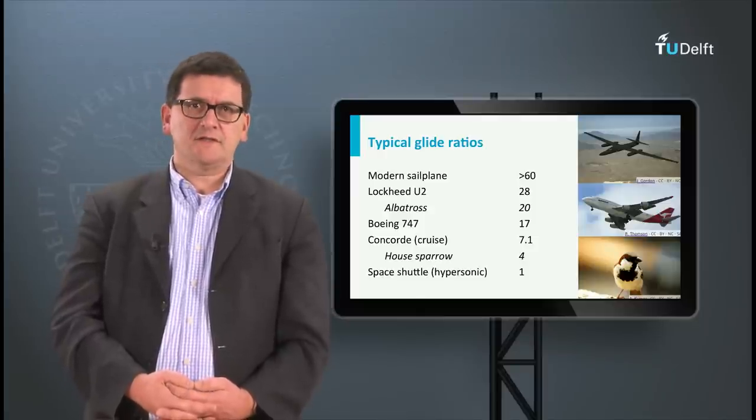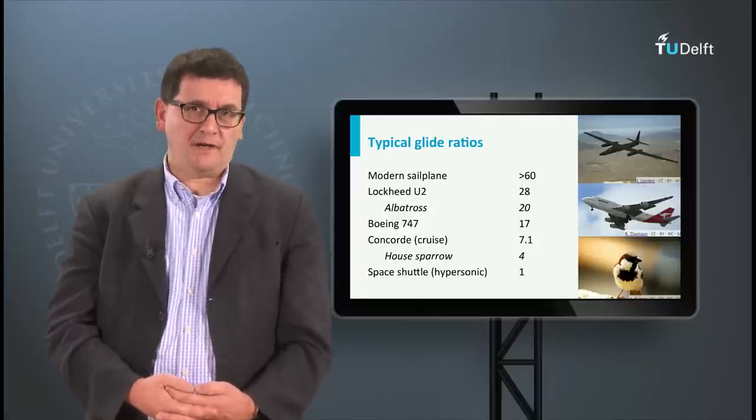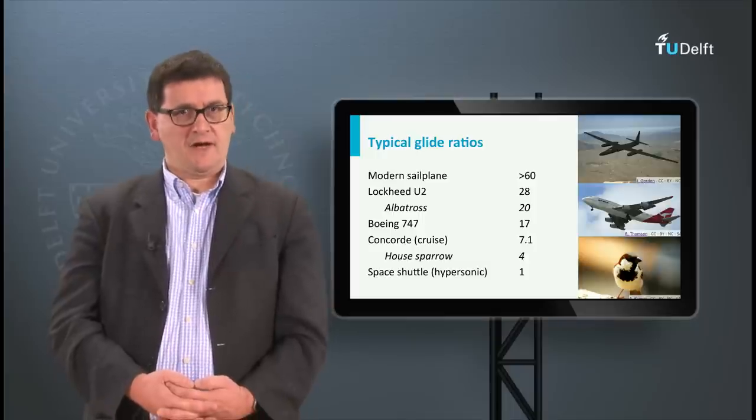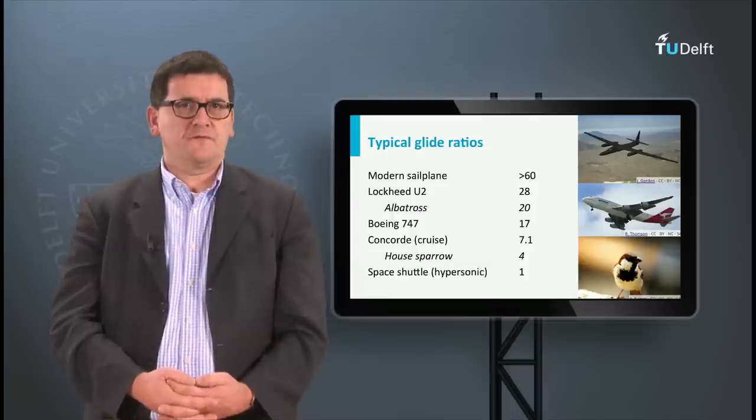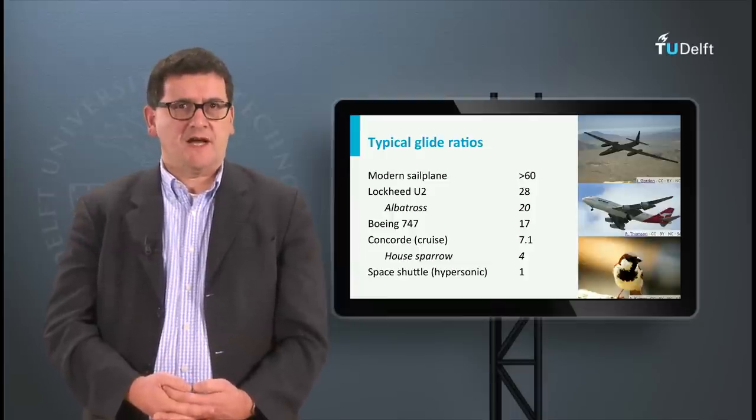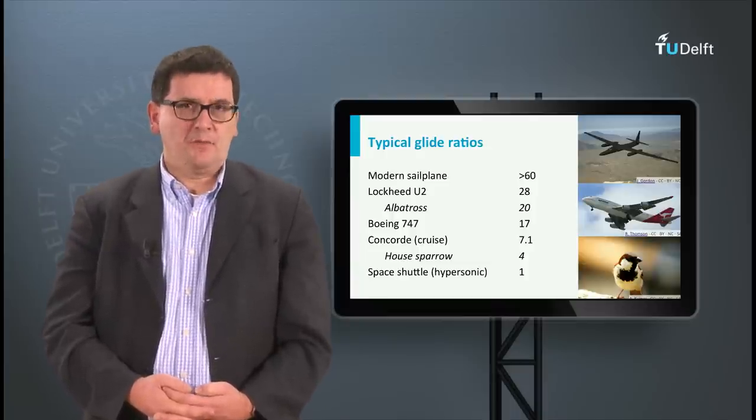On the other hand, the space shuttle flies like a brick, it has a very low glide ratio. Note also the glide ratios for the birds, in particular the Albatross, which is a superb glider.